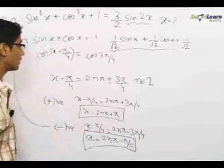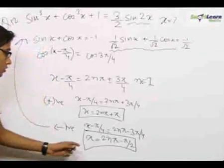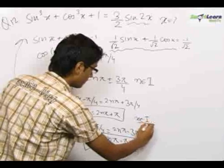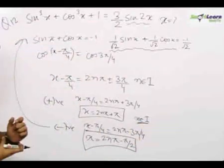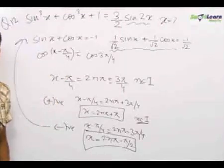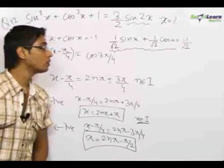So the two values of x satisfying the given equations are x = 2nπ + π and x = 2nπ - π/2, n belonging to integers. Now, this question was a simple question, but the important concept which was used in this question was if a³ + b³ + c³ = 3abc, then either a + b + c = 0 or a = b = c.